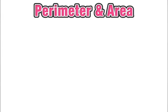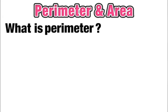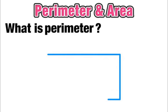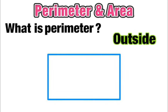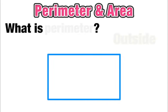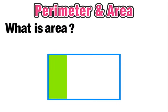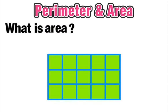Welcome to this special lesson on finding perimeter and area in rectangular figures. Perimeter is the length along the entire outside of the figure. Area is all the space covered inside the figure, and we measure area in square units.